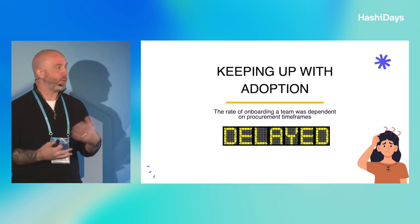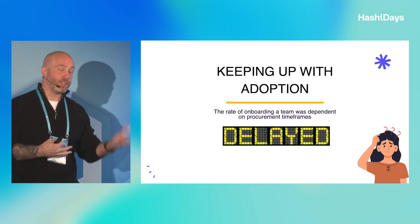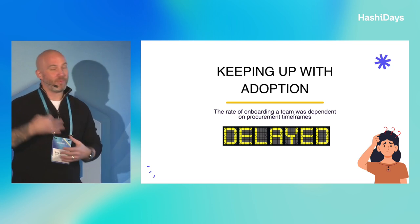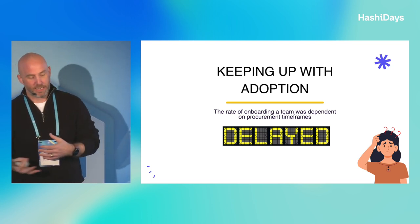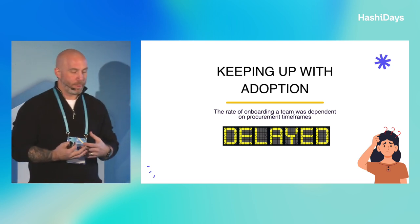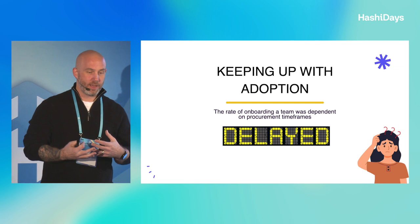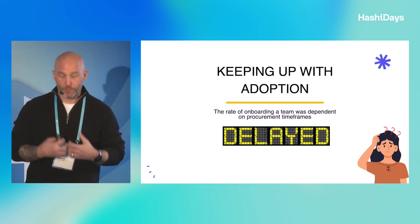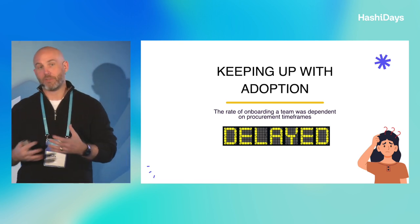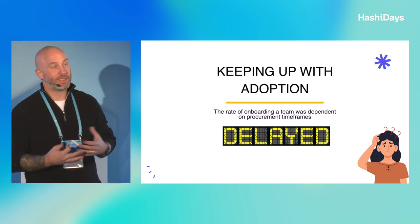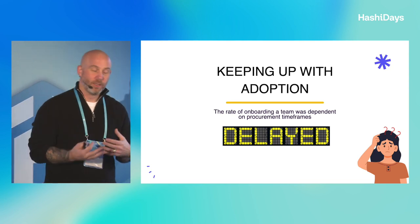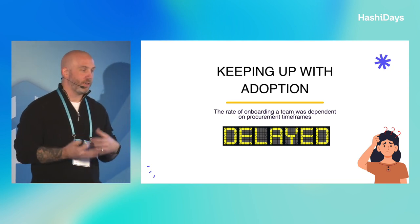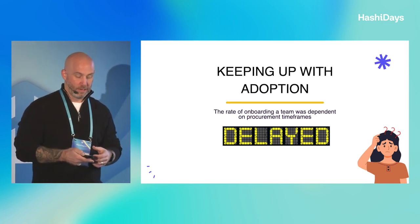We'd have to estimate the number of runs they would be using, the number of admin users they needed, and then go through a procurement process which generally took around eight to twelve weeks.